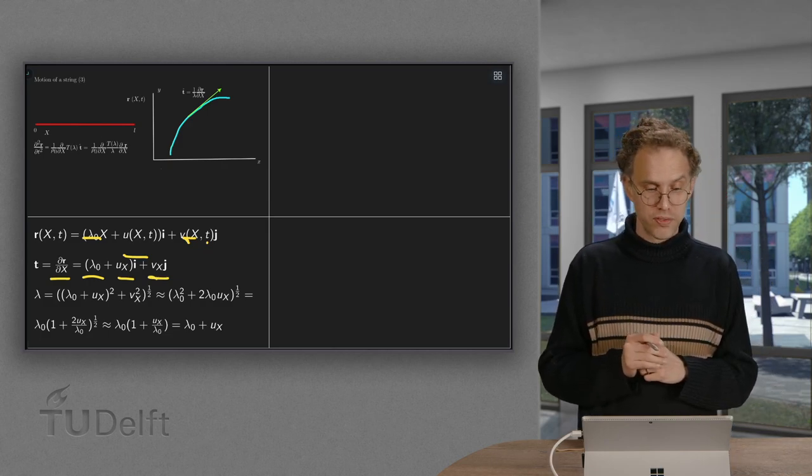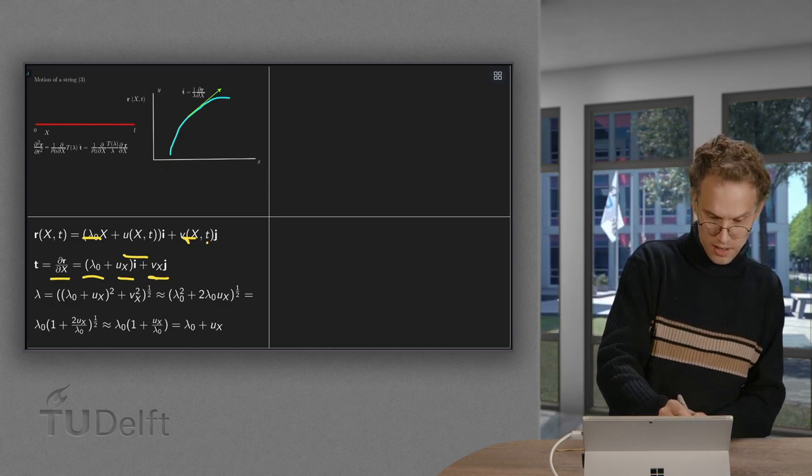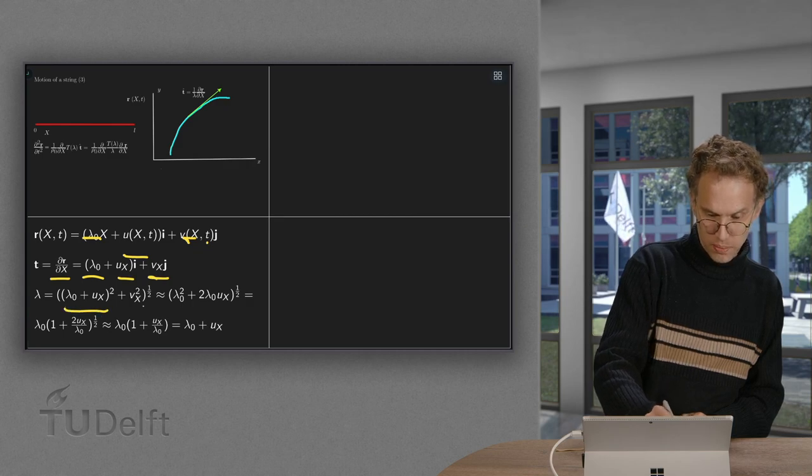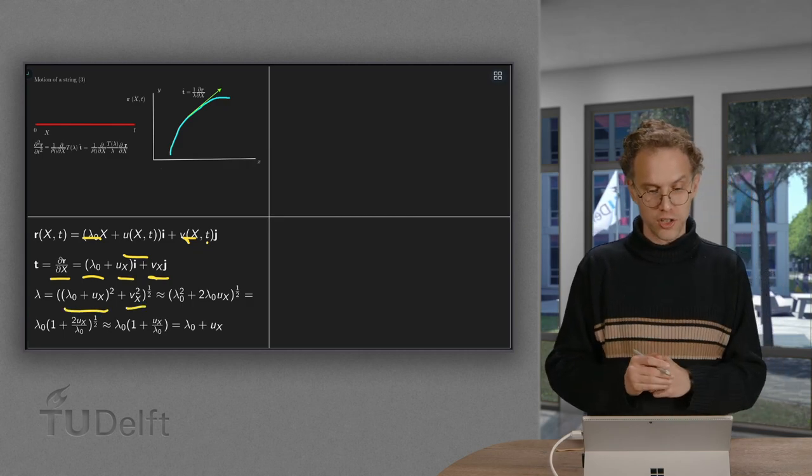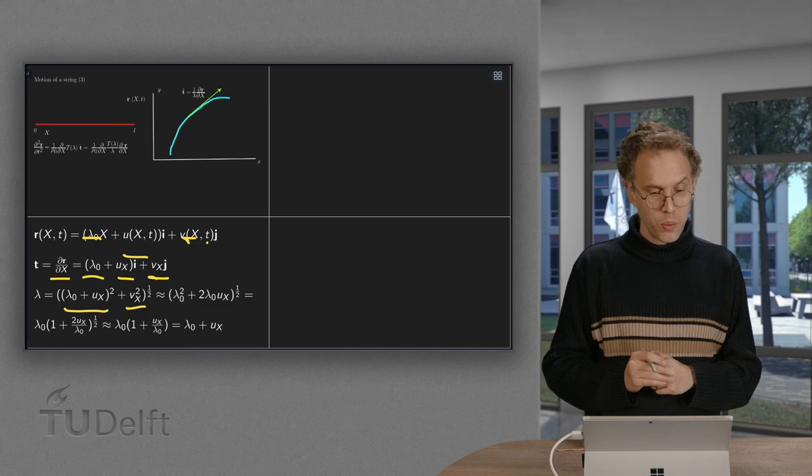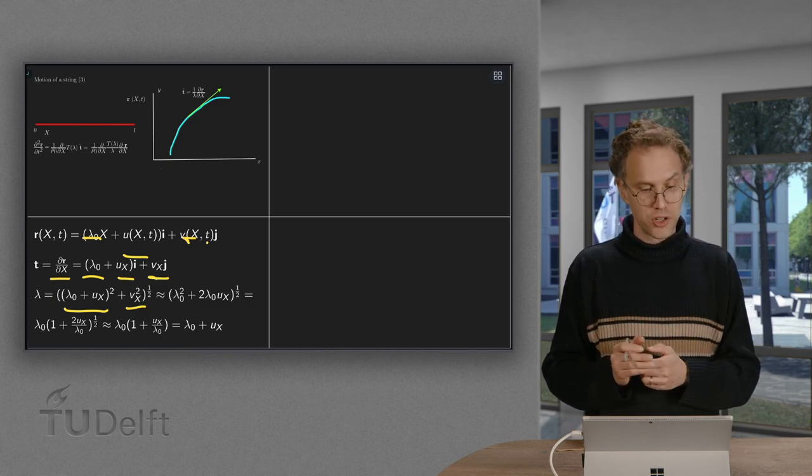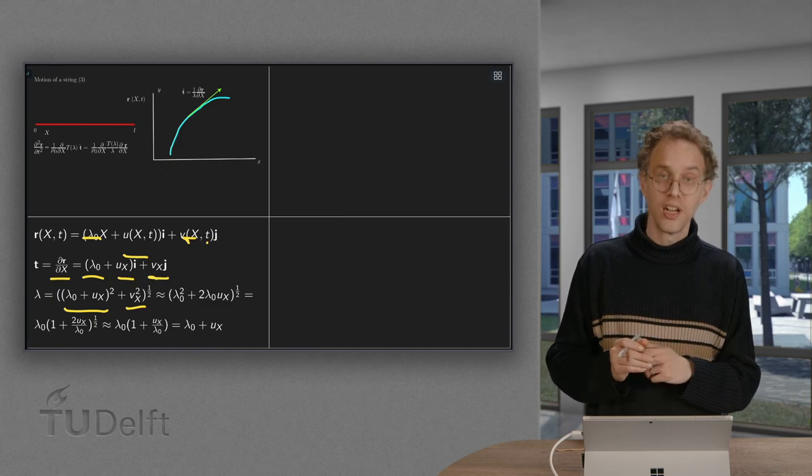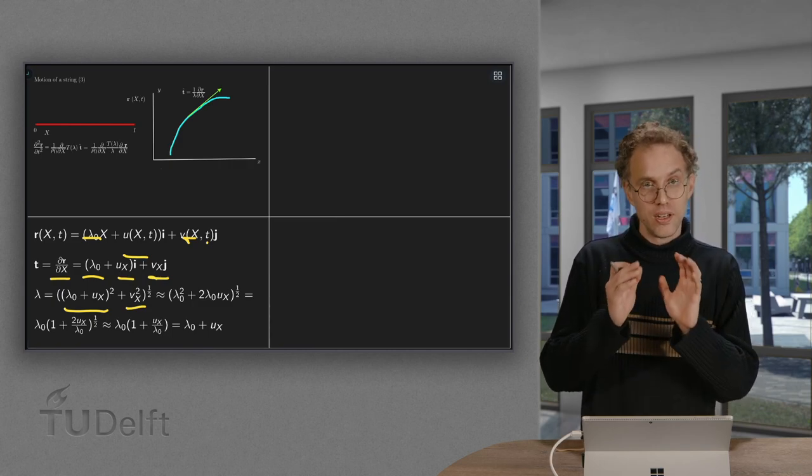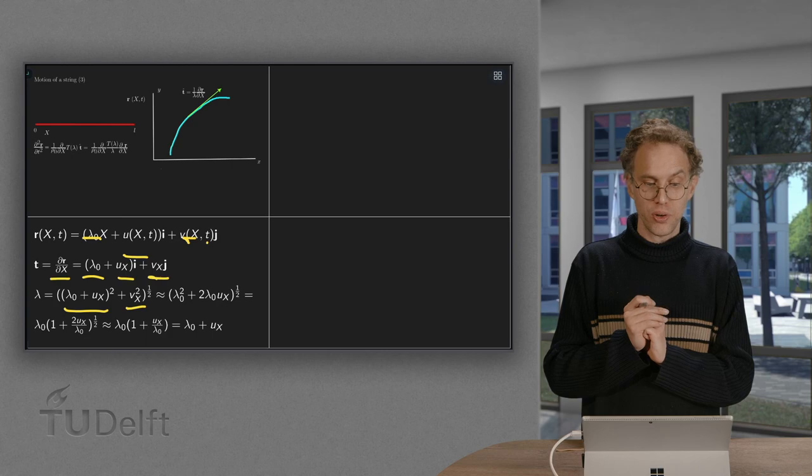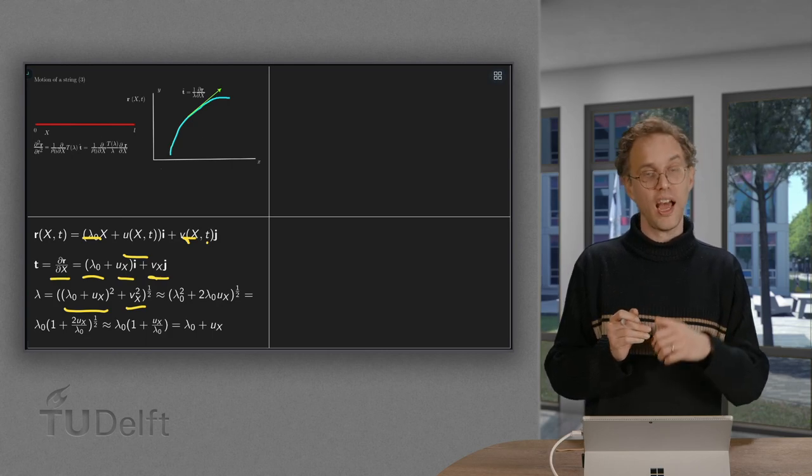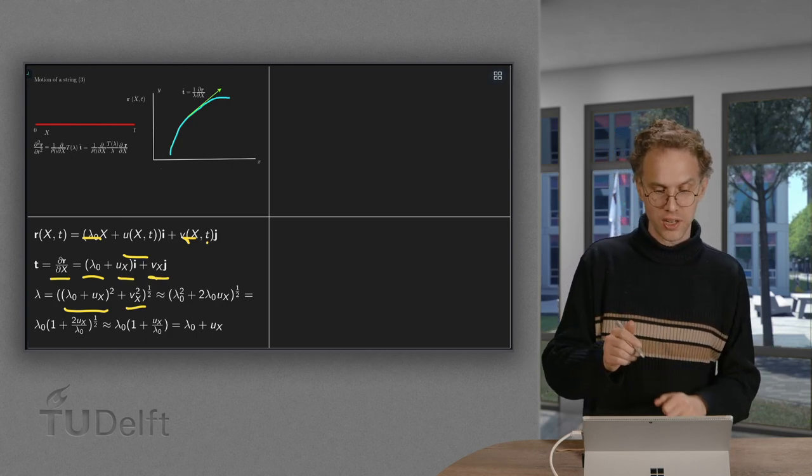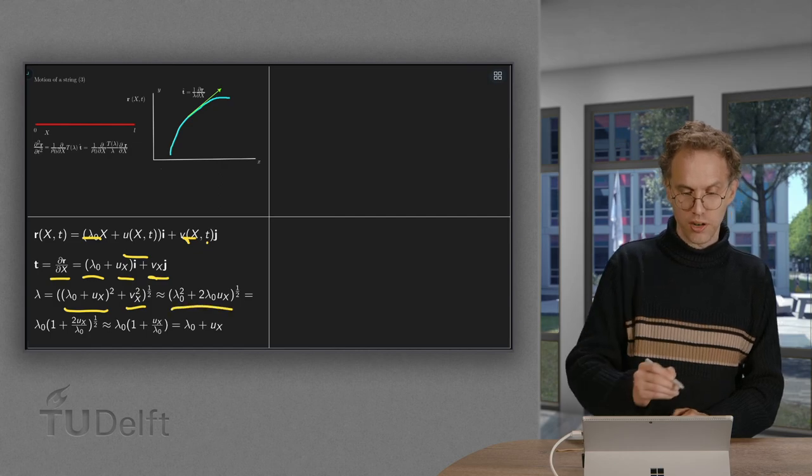So what's lambda? It's the norm of t. So the x component squared plus the y component squared and the square root. Then when you work out the first square, you get lambda 0 squared plus 2 times lambda 0 times ux plus ux squared. And we neglect all quadratic terms. So you neglect the ux squared and we neglect the vx squared. So we get this approximation over here.